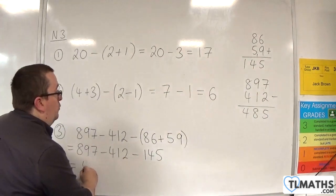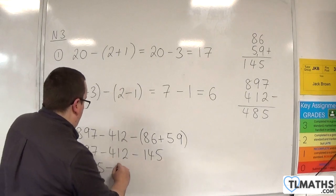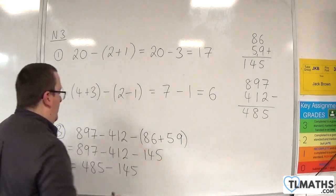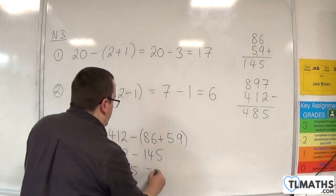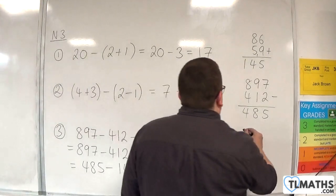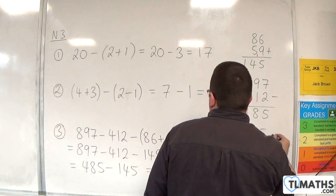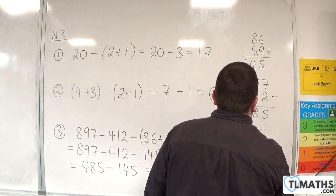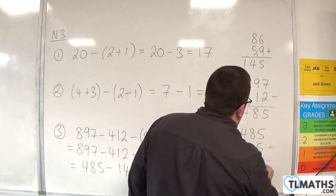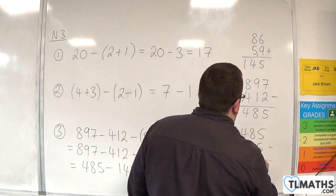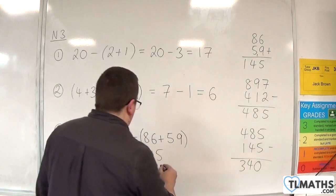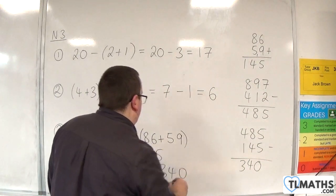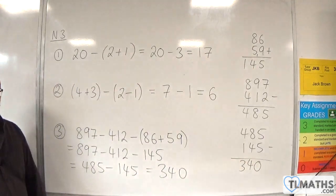So we have 485 take away the 145. Now you might be able to do that one in your head. Let's quickly do it over here: 485 take away 145. 5 take away 5 is 0, 8 take away 4 is 4, 4 take away 1 is 3. So our end result is 340.